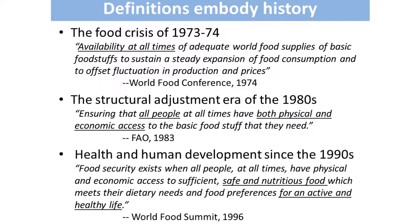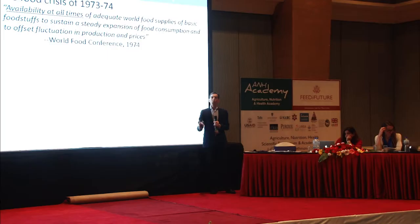The definition of food security adopted at the World Food Conference of 1974, in response to the food crisis of 1973-74, was: 'Availability at all times of adequate world food supplies of basic foodstuffs to sustain a steady expansion of food consumption and to offset fluctuations in production and prices.' That was their whole definition — this is not our definition today.